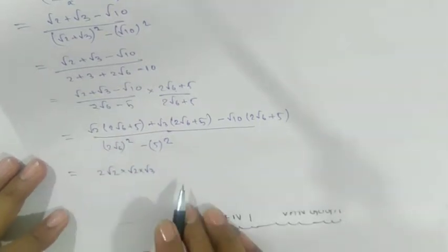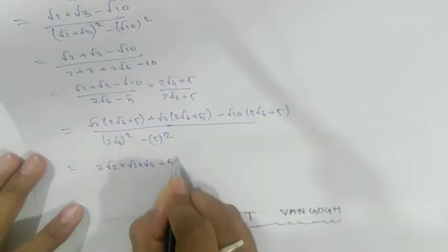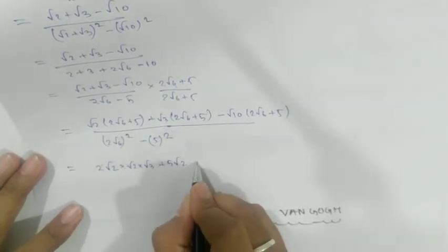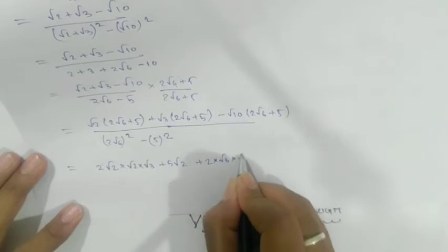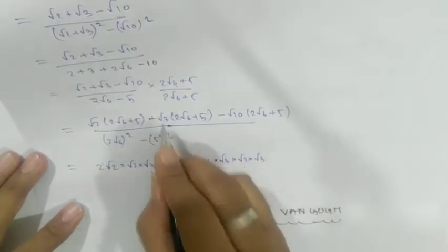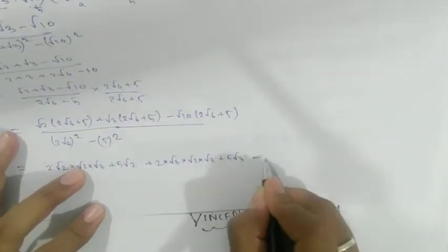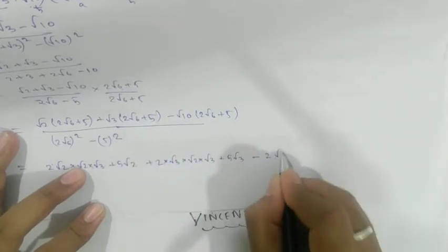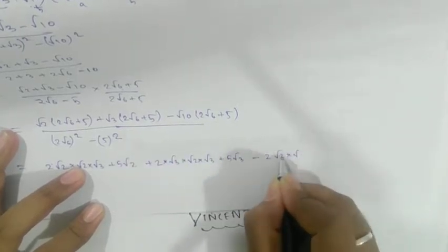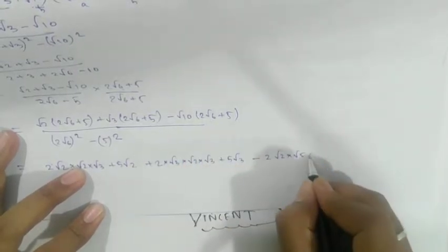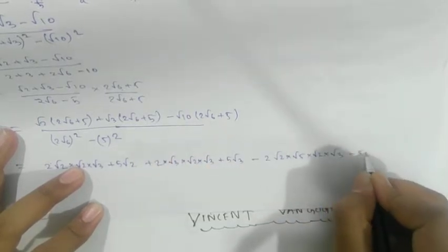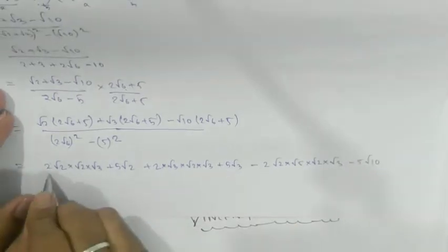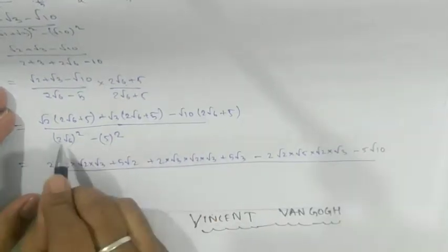Expanding the numerator: √2 · 2√6 gives 2√12 = 4√3. Next, 2√6 · √3 = 2√18, and using √6 = √2·√3 and √10 = √5·√2 we get terms like 5√2, -2√10, -5√10 and related simplifications after multiplying out (√2 + √3 - √10)(2√6 + 5).